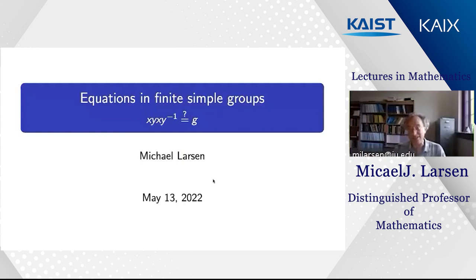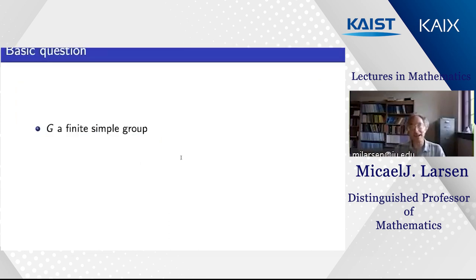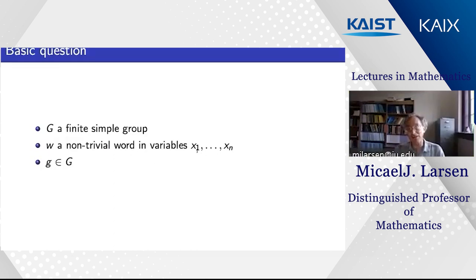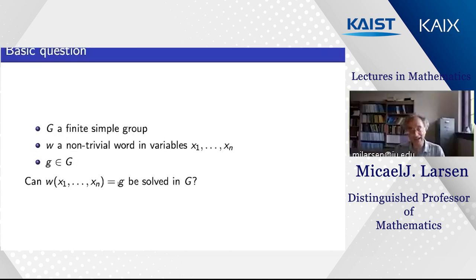What I want to talk about is equations where the variables are elements of a finite simple group. You can see an example in the subtitle: on the left-hand side you have variables — here called x and y, or more generally x₁ through xₙ — and on the right-hand side a constant which is an element of the group. The question is whether there exist elements x and y in the group such that the equation has a solution.